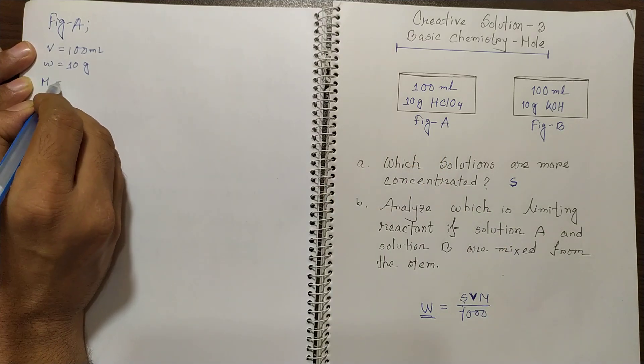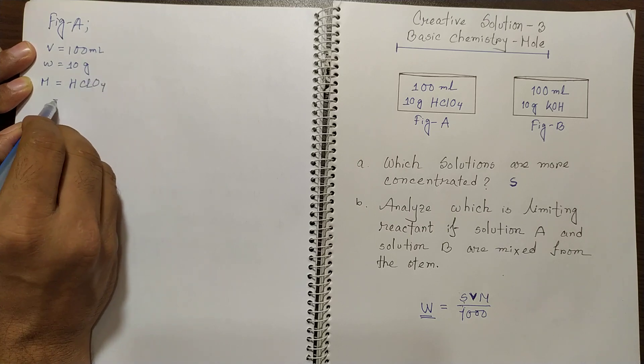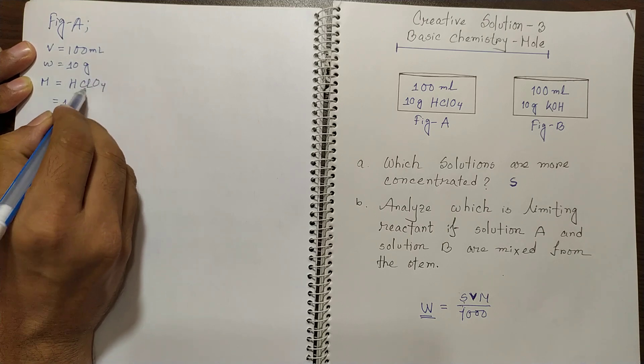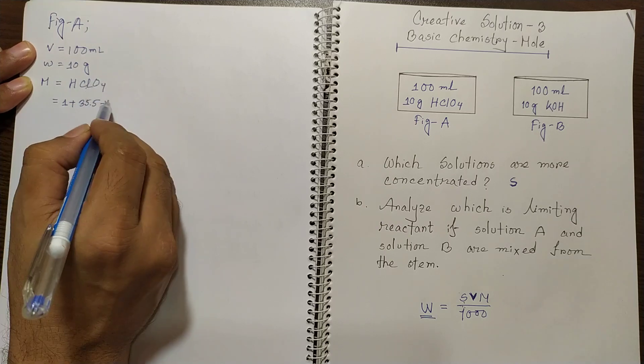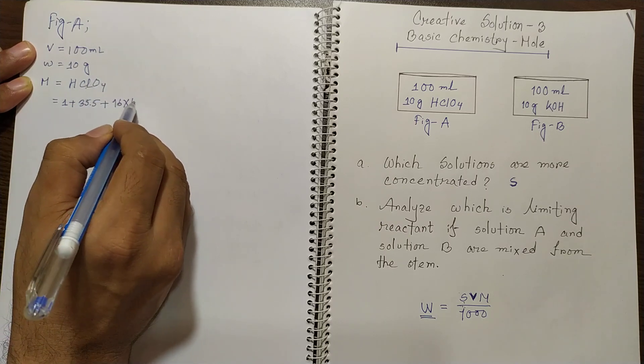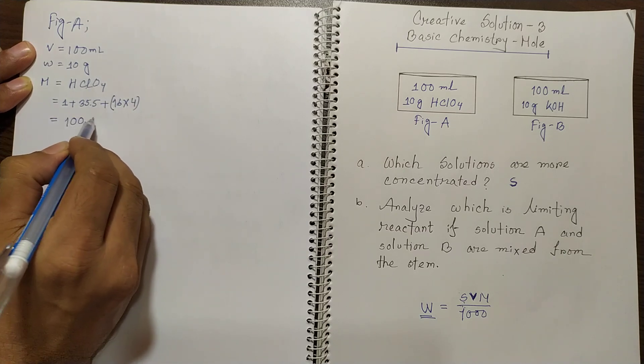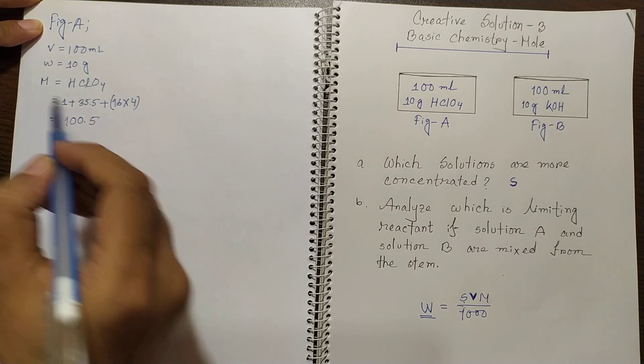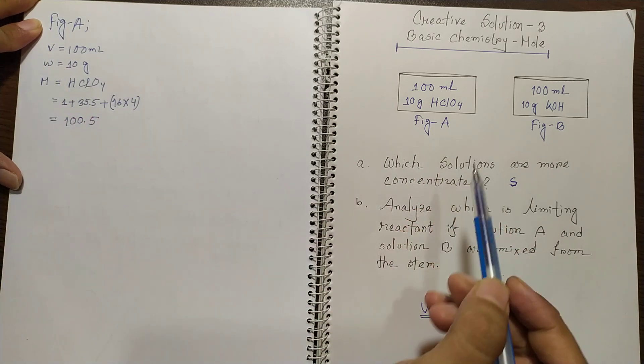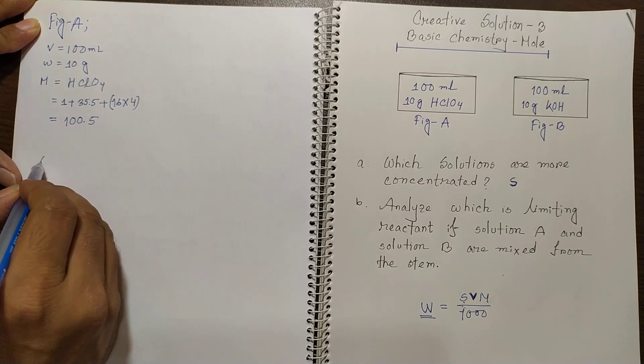So you must know the molecular mass of HClO4. It should be hydrogen 1, chlorine is 35.5 plus oxygen is 16 times 4. So it would be altogether 100.5. So you have this data from figure A.